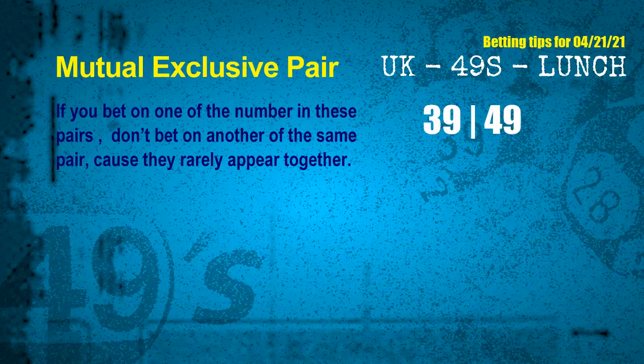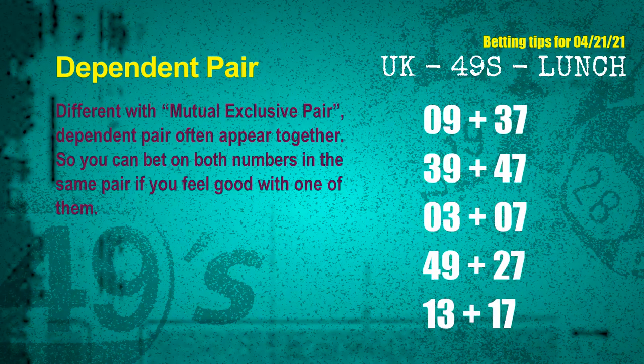These numbers in a pair both match the following ones and colors, but according to thousands of results before, they rarely appear together. This means if you bet on one of them, don't bet on the other in the same pair. The mutual exclusive pair for next draw is 39 and 49. Some numbers are mutual exclusive, some are dependent. Numbers in the same dependent pair you can bet on both, because they are often drawn in one draw.